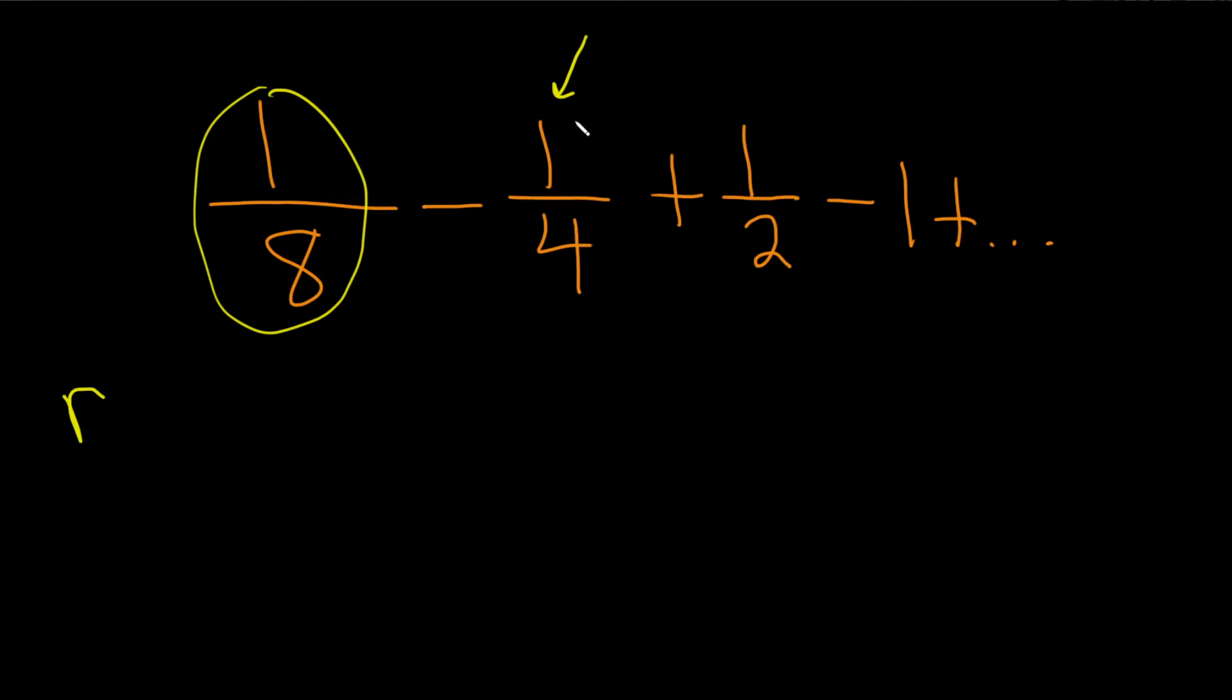Likewise, if we take negative two and multiply it by negative one fourth, we're going to get one half. If you're not sure, what you can do is just take any term and divide by the previous. Let's take negative one fourth and divide by the one before, and this will give you r, which is called the common ratio.